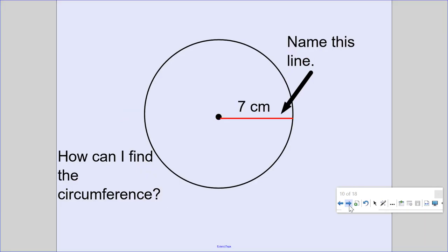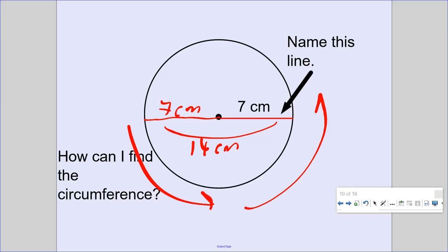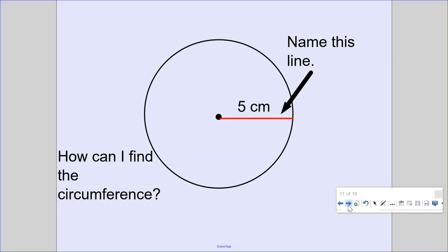Name this line. This is called the radius. So how long is the diameter? Two radius makes a diameter. So the diameter is 14 centimeters. So 14, 14, 14. So 14 times 3, it's a little more than 42 centimeters is the circumference of this circle.